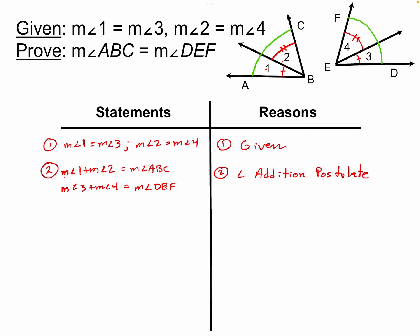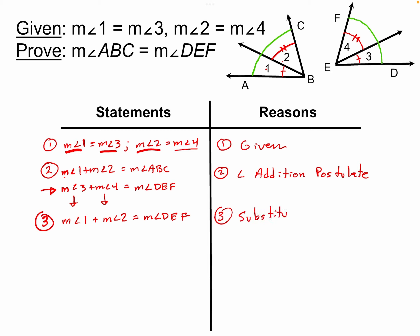Now I'm going to take advantage of my givens. I know angle 1 equals angle 3 and angle 2 equals angle 4. So I'll focus on the DEF equation and substitute: replace measure of angle 3 with measure of angle 1, and measure of angle 4 with measure of angle 2. That still equals measure of angle DEF. That's my substitution property of equality, because I substituted angle 1 for angle 3 and angle 2 for angle 4.